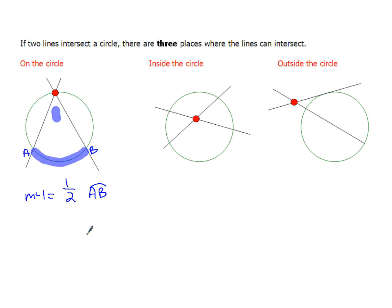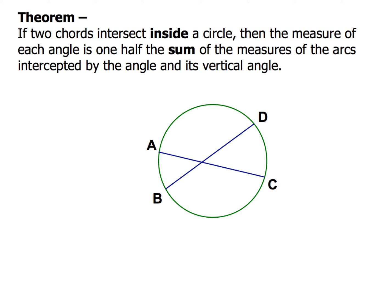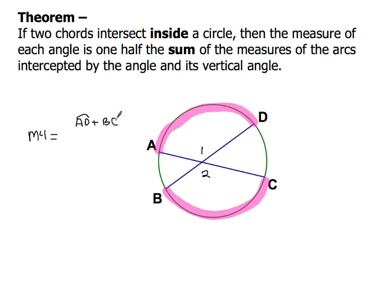Both the inside and outside circle intersections are going to be new, and they'll be similar because they also involve one half. Now the theorem: if two chords intersect inside a circle, then the measure of each angle is one half the sum of the measures of the arcs intercepted by the angle and its vertical angle. Use two highlighters — highlight arc AD and arc BC. Angle one and its vertical angle two both have the same measure, so: measure of angle one equals arc AD plus arc BC, divided by two.